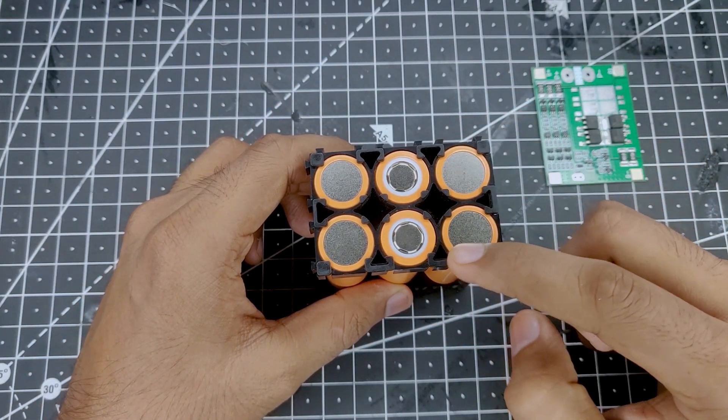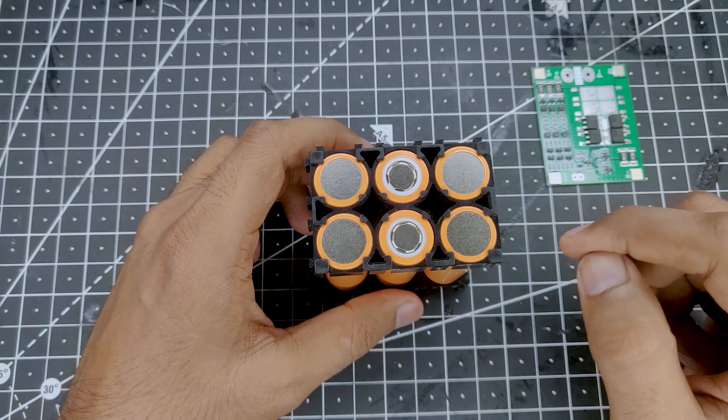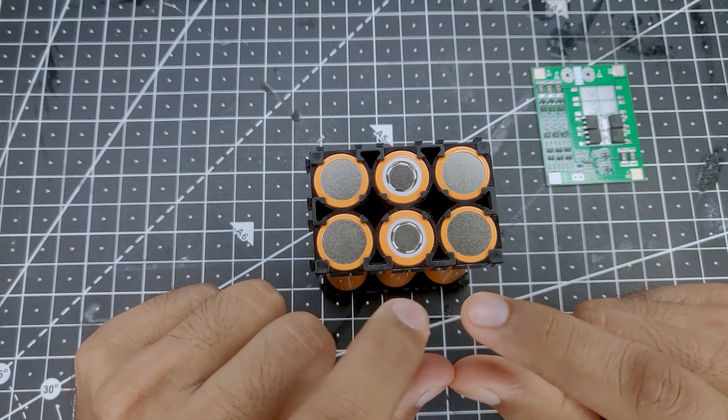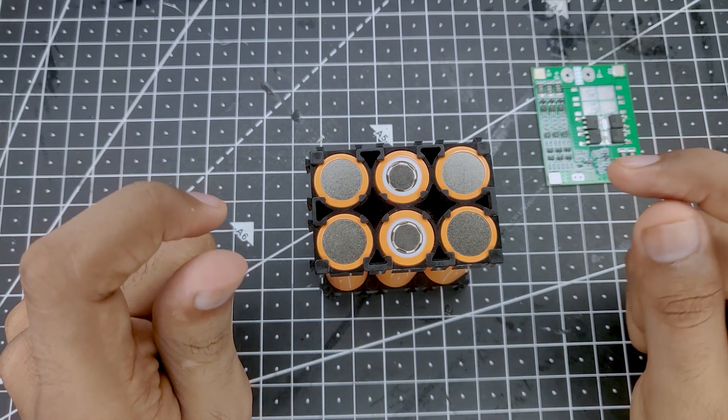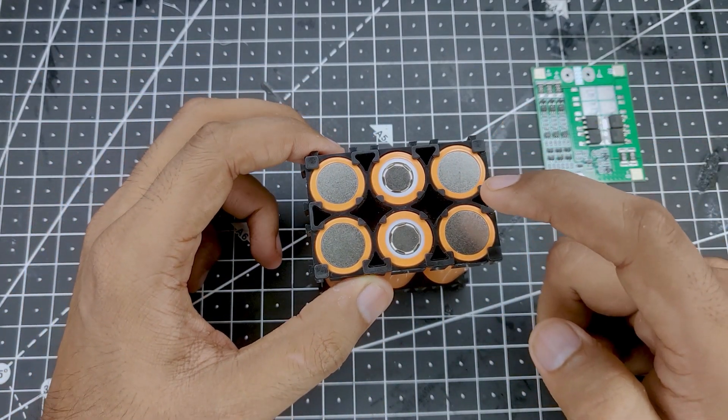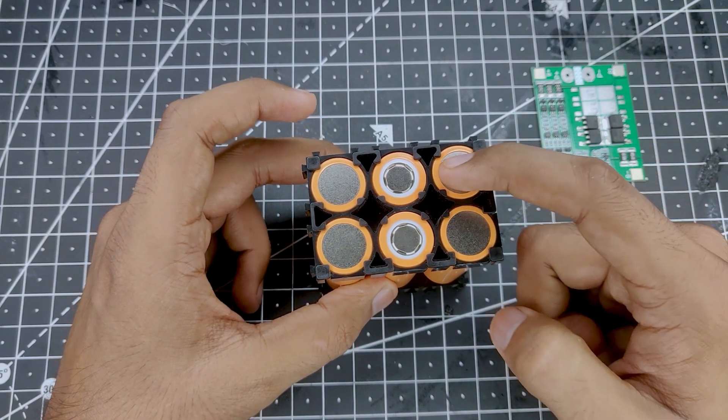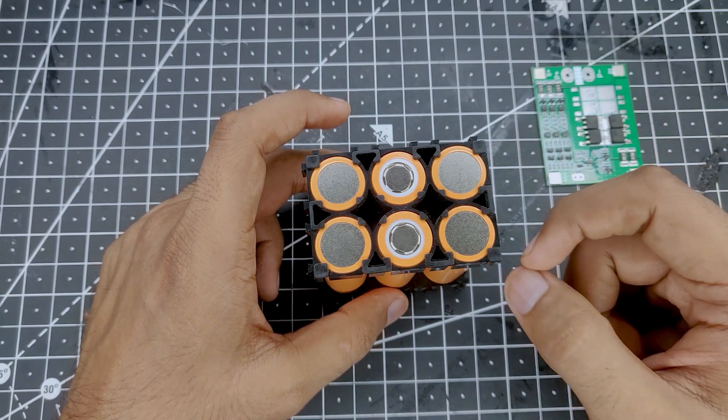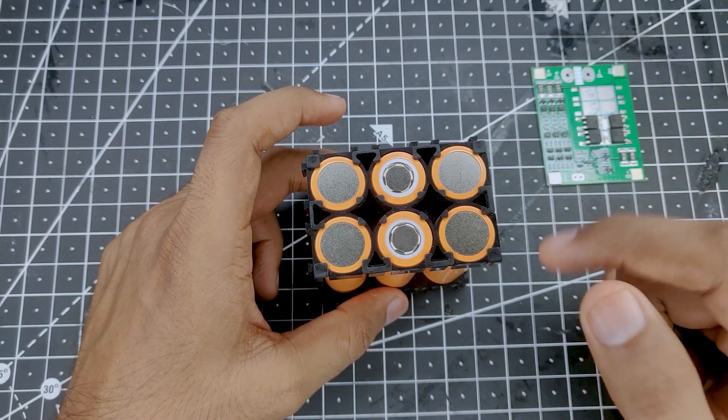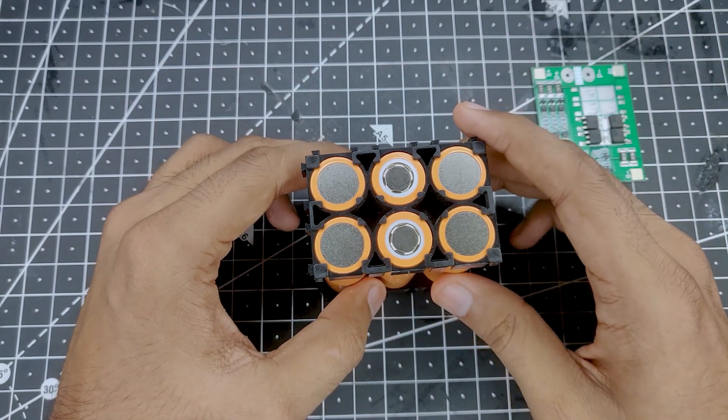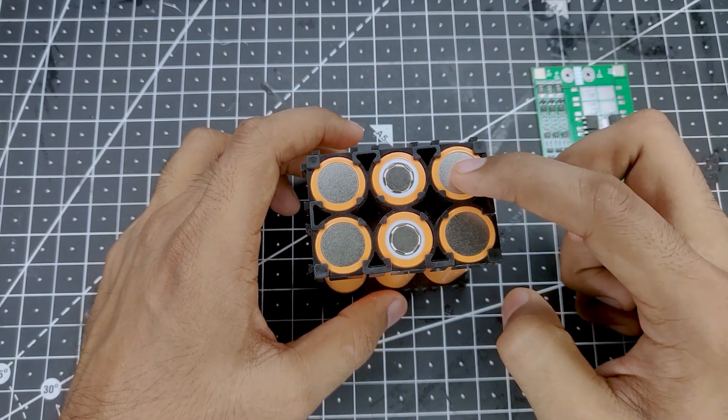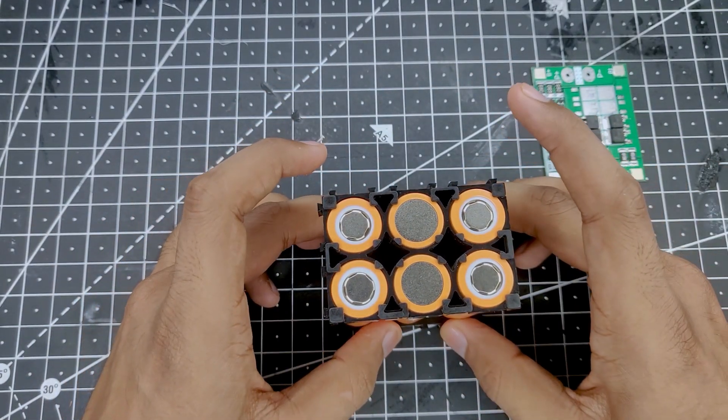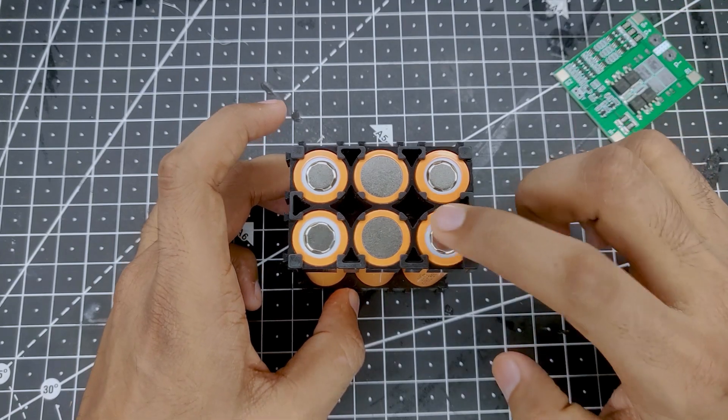Now to connect them together you can do two things - one is the recommended one which is to spot weld them together using a metallic strip made of nickel. But I don't have a spot welder or the strip, so I'm going to put some solder at the middle of each battery, same on the bottom as well, and then connect it with the BMS. Let's solder them together.